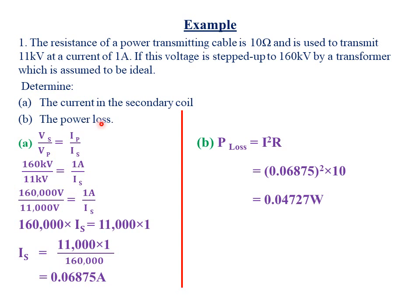For part B, they want us to find the power loss in the transmission cables. Power loss is given by I squared R — the square of the current multiplied by the resistance. We use the current in the secondary coil, 0.06875 amperes, squared, multiplied by the resistance of 10 ohms. Taking 0.06875 squared times 10, we get a power loss of 0.04727 watts.